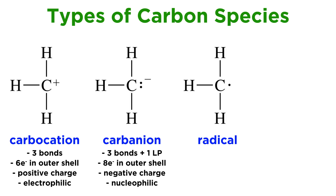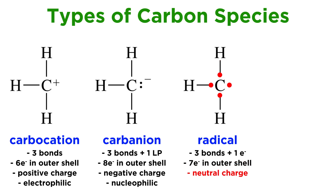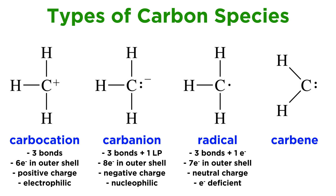Then we learned about carbon radicals. These have seven electrons in their outermost shell, as one of them is unpaired. Contributing four electrons to the Lewis structure, the carbon atom is of neutral charge, but because it doesn't have a full octet, it is still a form of electron deficiency. Carbon radicals will seek to gain a single electron from something else so as to complete its octet, usually through propagation steps that produce other, more stable radicals. Now it is time to learn about one more unstable carbon species,